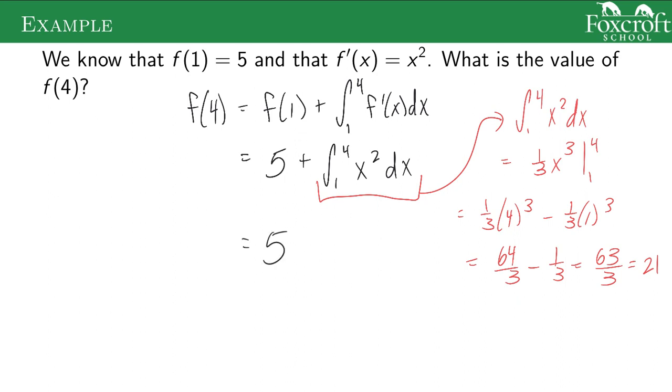I started at 5. This integral turned out to be 21. So it accumulated a change of 21 over this amount of time. So f of 4 would have to be 26.